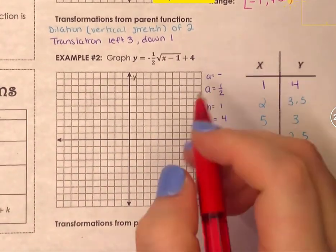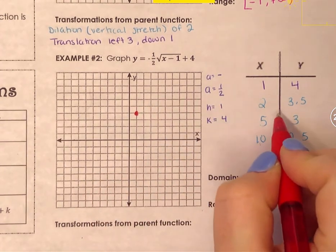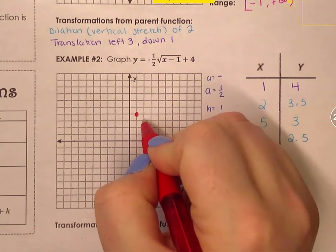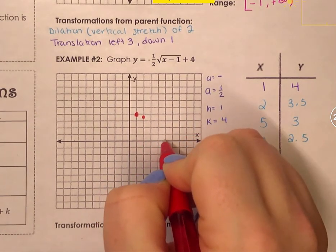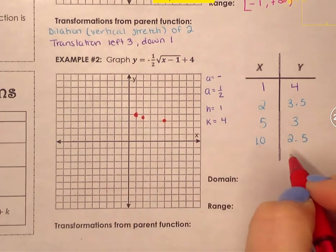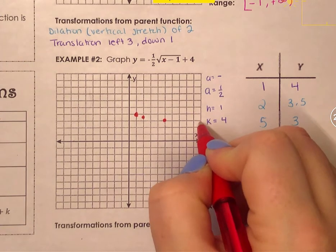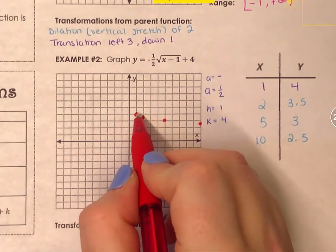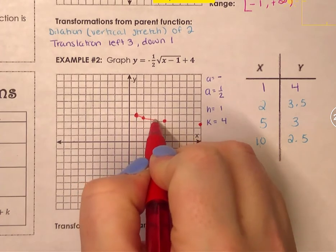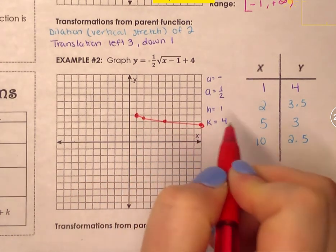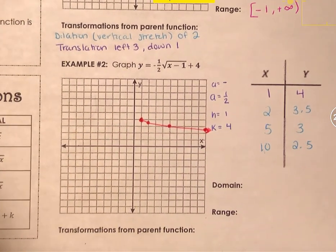My four coordinates are: (1, 4) as the starting point, (2, 3.5), (5, 3), and (10, 2.5). I plot each of these on the coordinate plane. Since (1, 4) is the starting point — nothing goes to the left of it, nothing above it — I start there, connect the coordinates, and draw an arrow indicating the curve continues going right and downward.